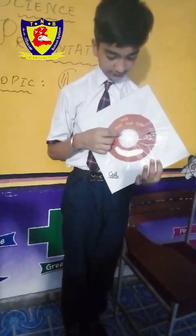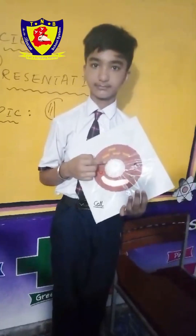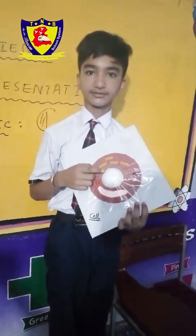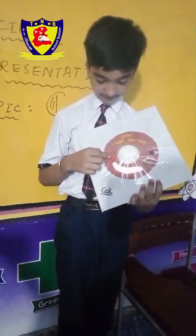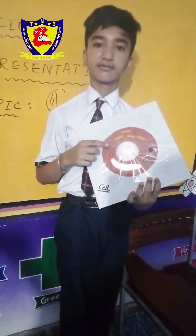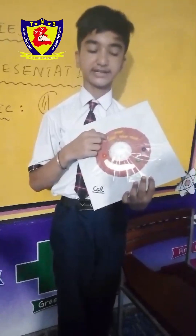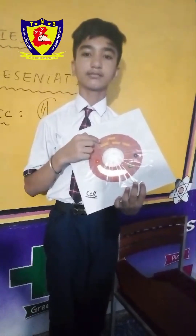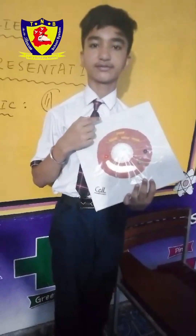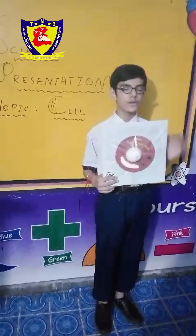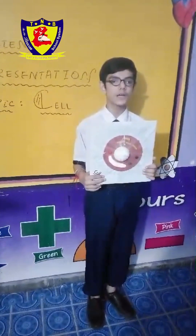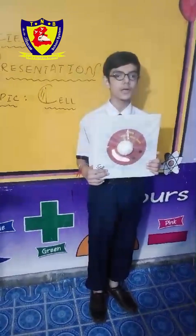My name is Sai and I study in class 7. Today my topic is cell. So what is cell? Cell is the basic unit of life. This is the nucleus — the brain of the cell — it controls the cell. And this is a vacuole — it stores glucose and water. And this is mitochondria — it produces power and energy for the cell.